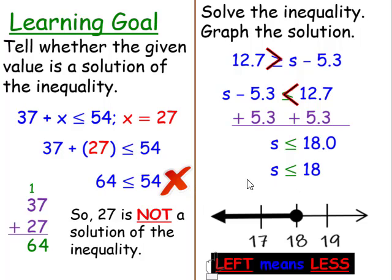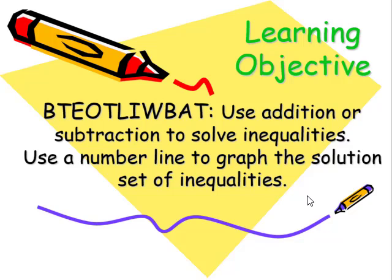When I graph it, since I have an equal to sign, I'm going to have a closed circle. The inequality symbol is pointing to the left, so remember s is less than, left means less, and we're going to our left.